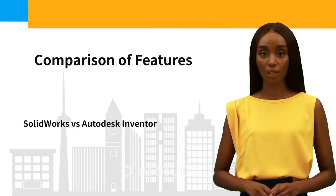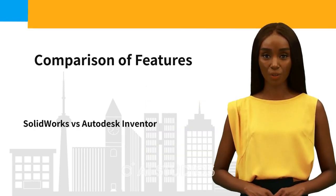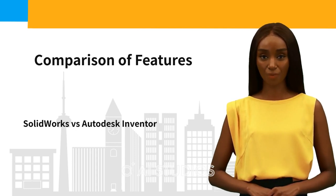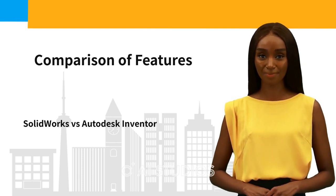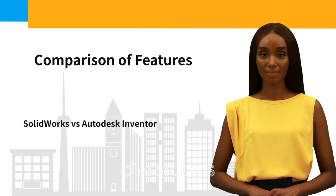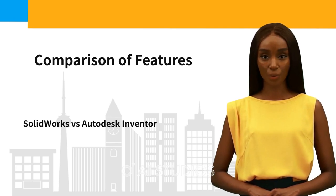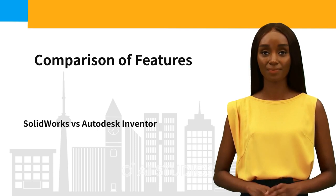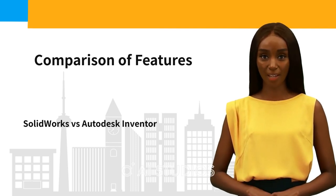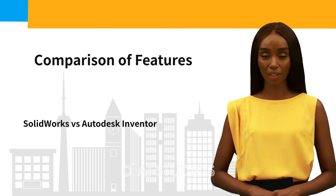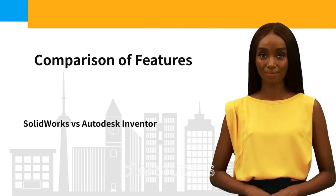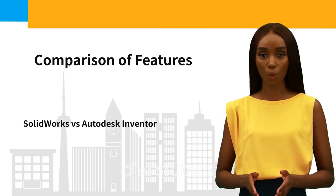Both SolidWorks and Autodesk Inventor are powerful and widely used 3D CAD software that offer a range of tools and features for designing, modeling, and simulating mechanical systems. There are some differences in their features and capabilities. One key difference is that SolidWorks offers advanced features for sheet metal design, while Autodesk Inventor provides advanced assembly modeling and visualization features. SolidWorks has a wide range of tools for creating sheet metal parts, including flattening and unfolding, bend tables, and corner treatments.